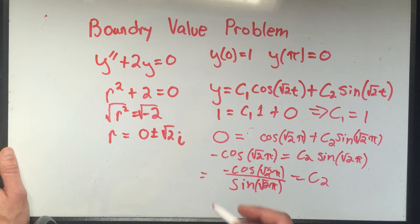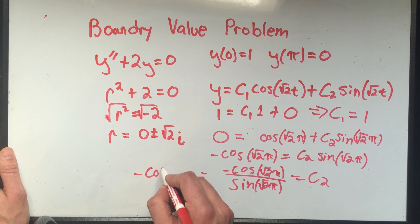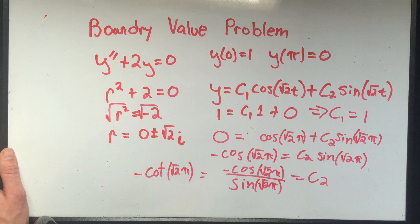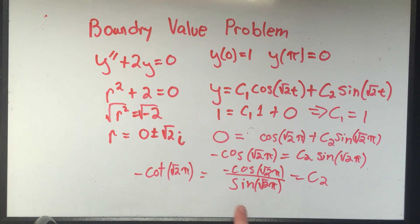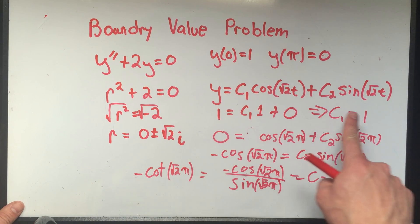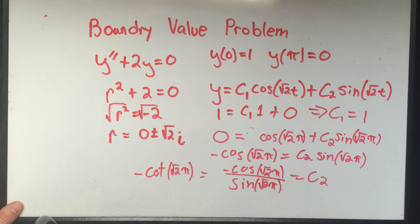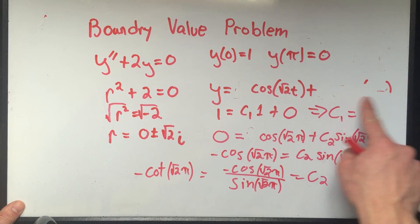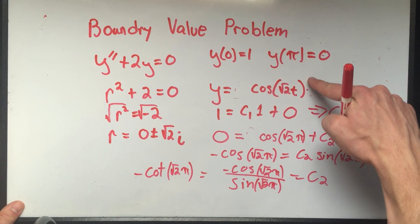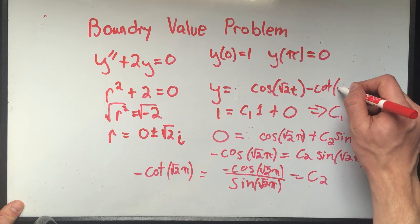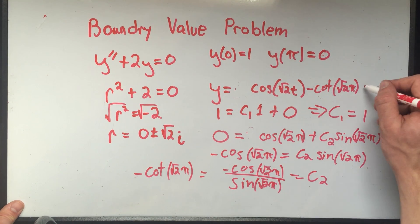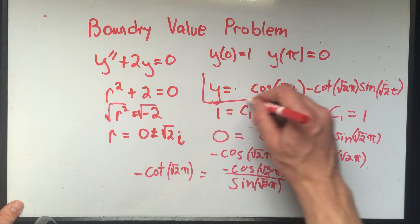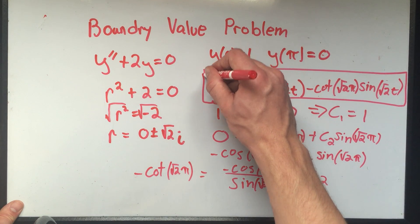Hey, would you look at that? Cosine over sine, that's cotangent square root two pi. I don't know what that number is. Plug it into the calculator if you want to know. So that means that our specific solution to this, this was our general solution. And if I plug in one, the value of one for c1, and if I plug in my new value that I just got for c2, my value for c2 was minus cotangent of square root two pi, and that was in front of a sine square root two t. So this is the answer to this boundary value problem.